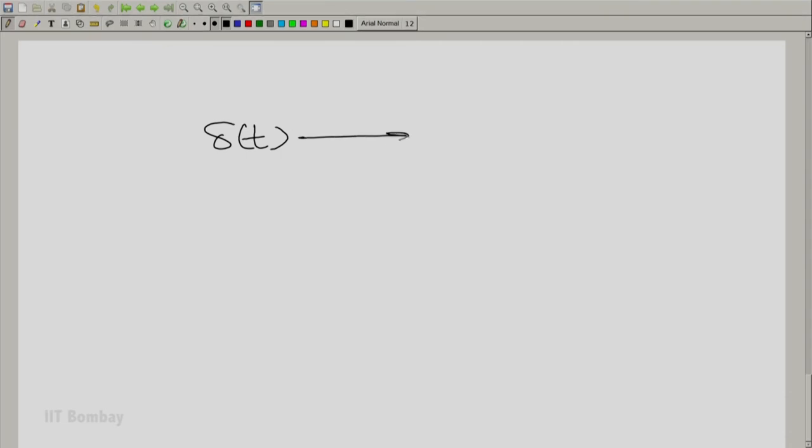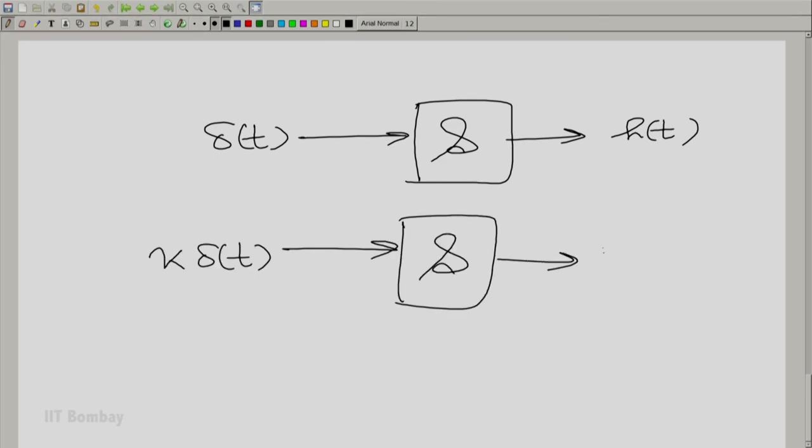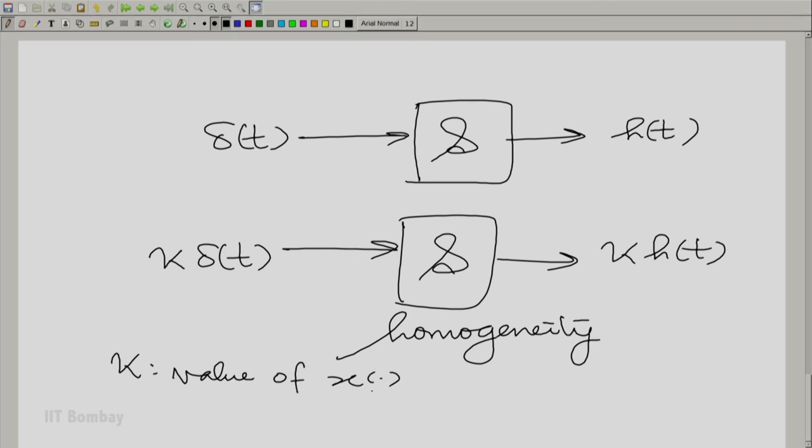Now let me bring in homogeneity. So if I know that delta t results in h t, then I also know that when I multiply delta t by a constant, let us say kappa, it should result in kappa times h t. This is a consequence of homogeneity. And in particular, if kappa were to be essentially the value of x at some point, this is still true. Let us keep that in mind.